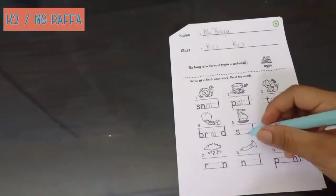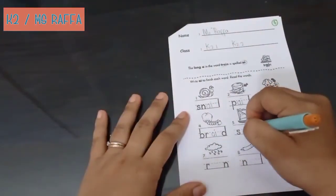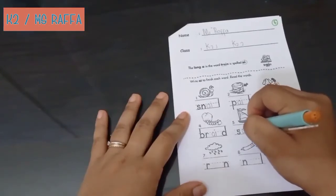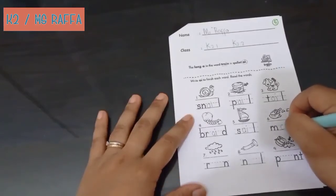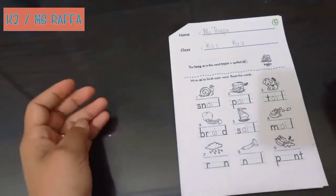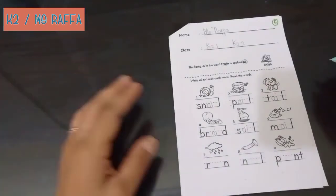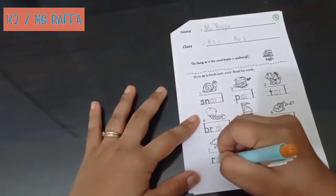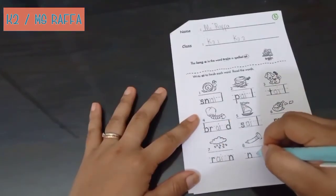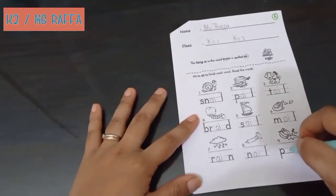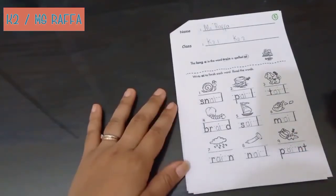And then this one. Sail. Sail. Sail means kapal layar. Sail. And then this one. Mail. Mail. Mail means surat. We have in here rain. Rain. Everybody knows rain. And this one, nail, paku. Nail. And the last one is pain. Pain.